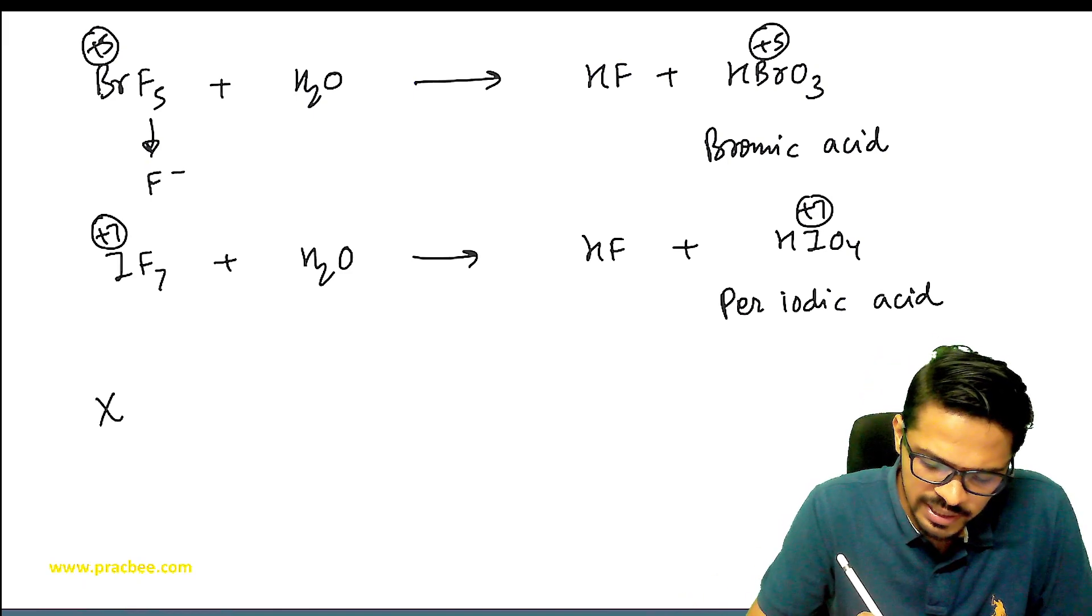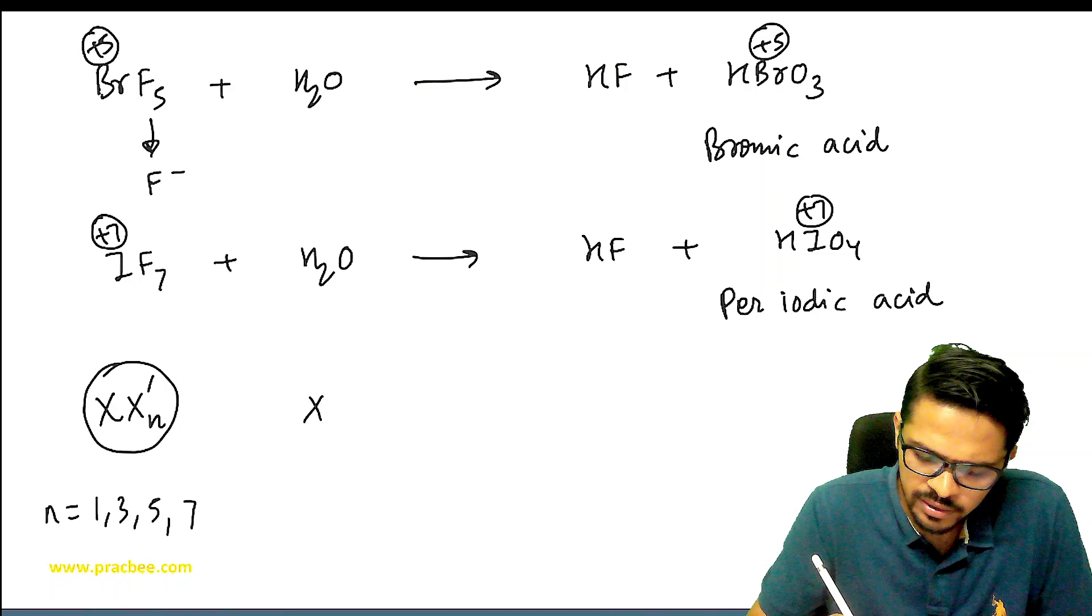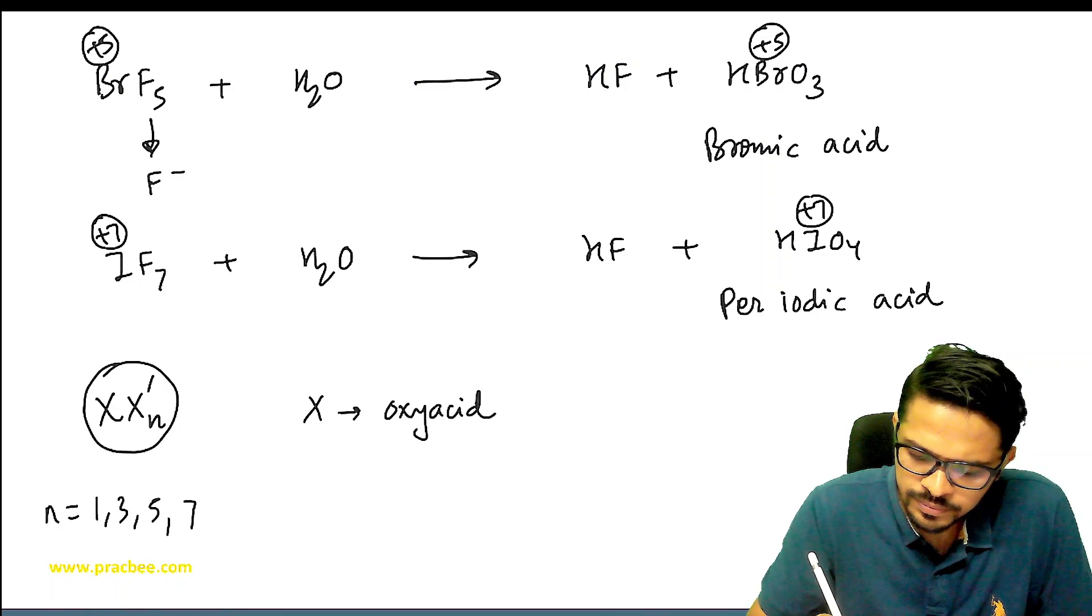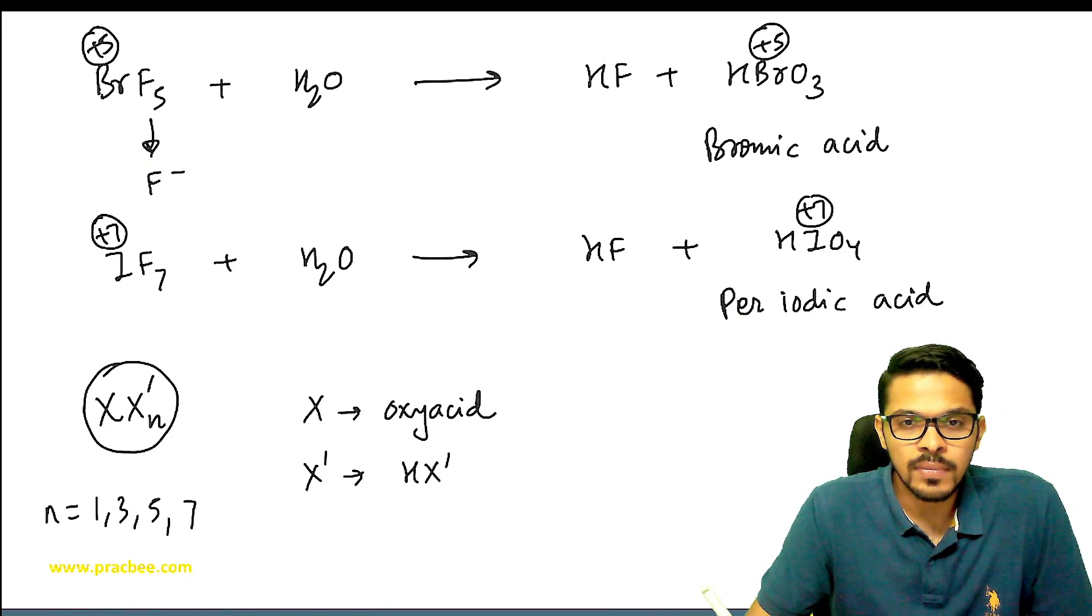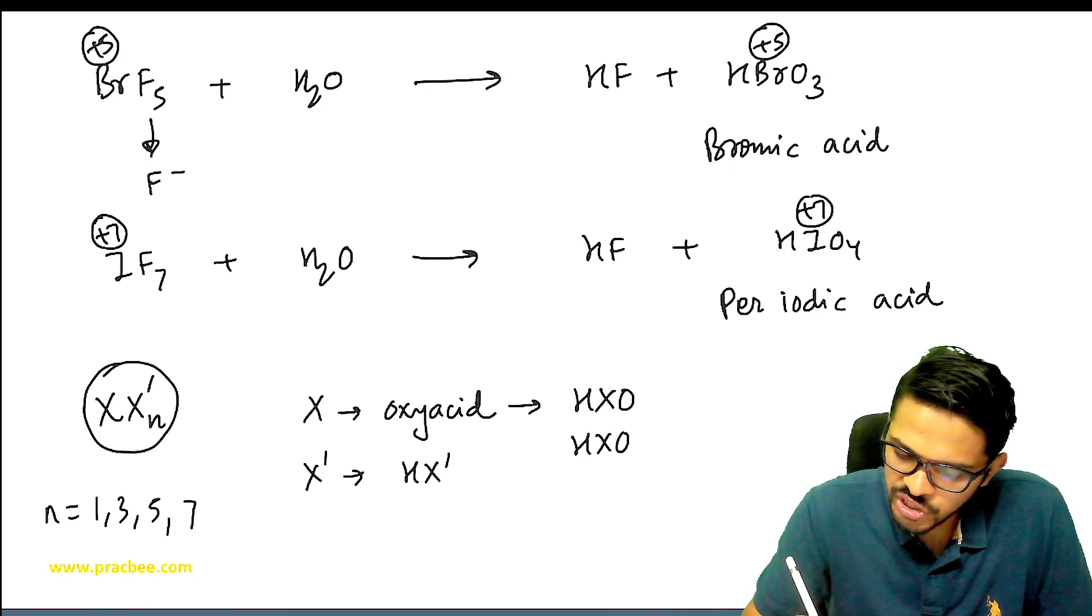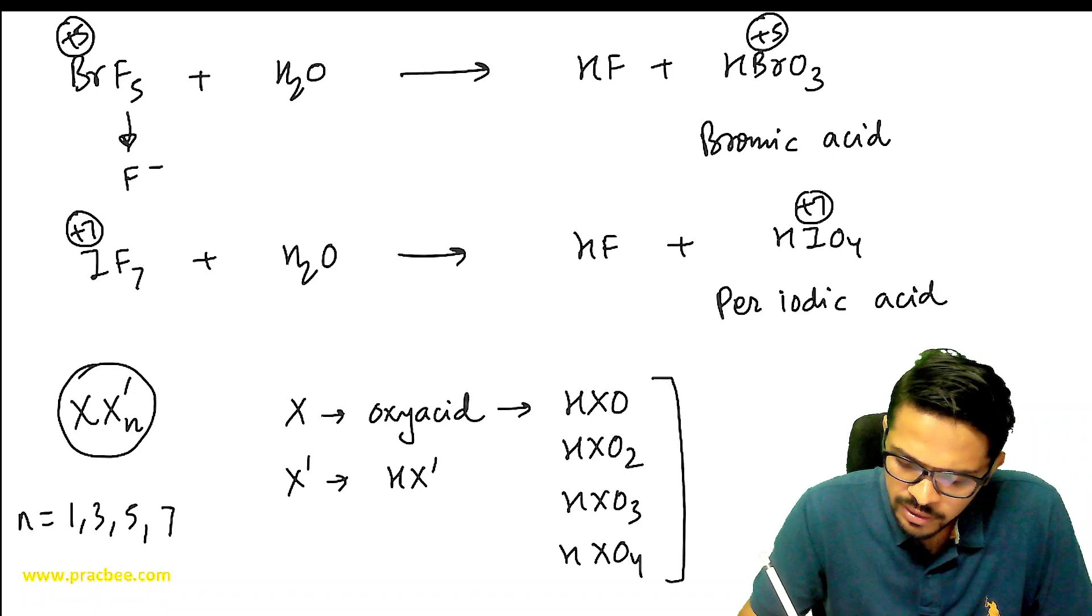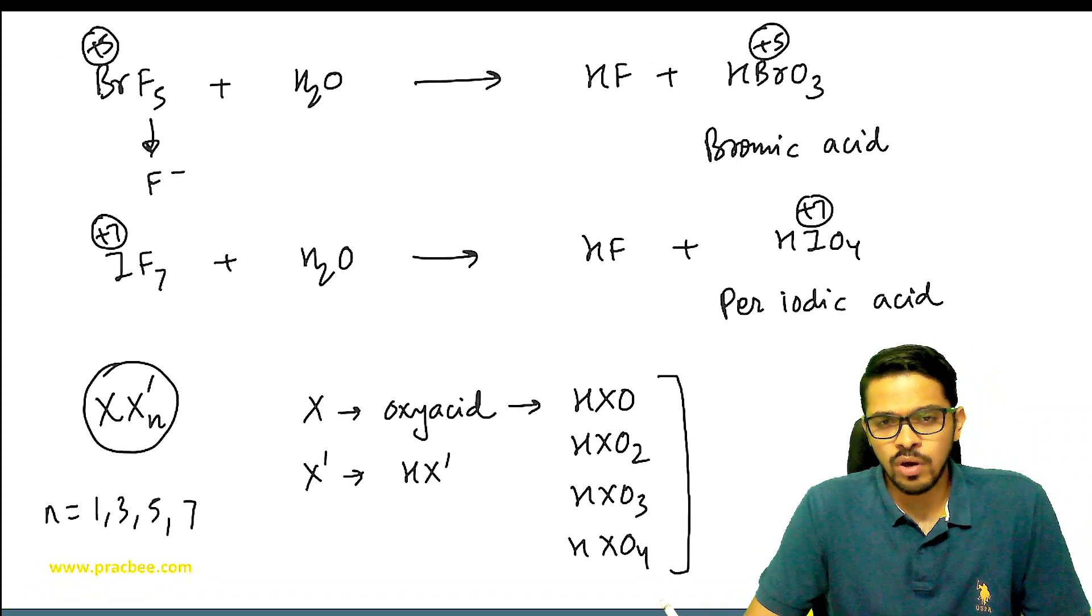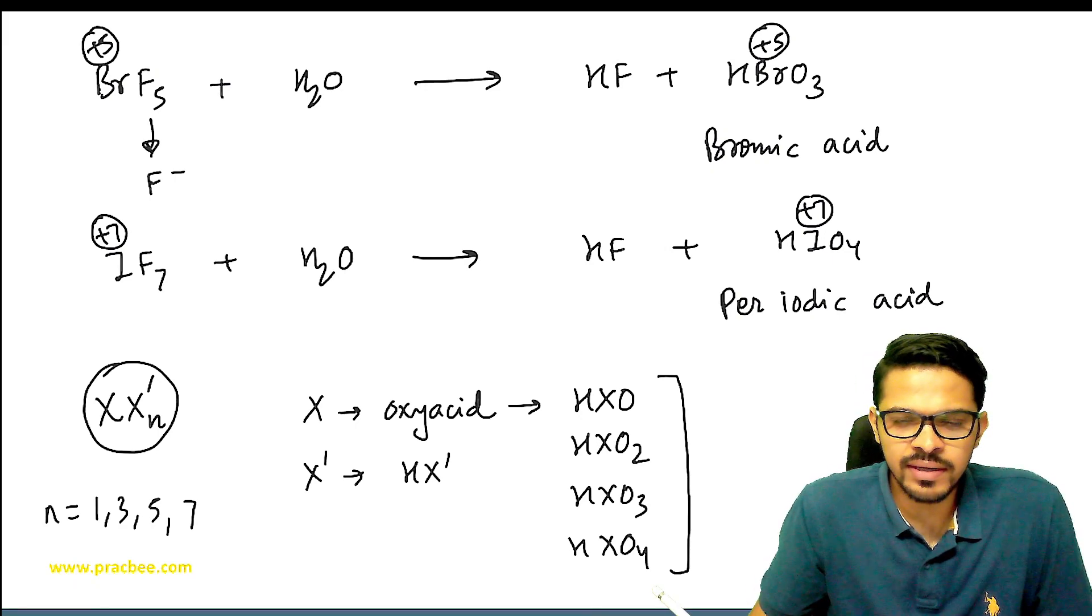So you have seen that if we have X-Xn where n values can be 1, 3, 5, 7, then X which is present makes its oxy acid and X' makes HX'. The oxy acids are HXO, HXO2, HXO3, HXO4, etc. If you don't know about these, I have made a video on oxy acids of halogens that you can go through. I will be adding that link in the description below.